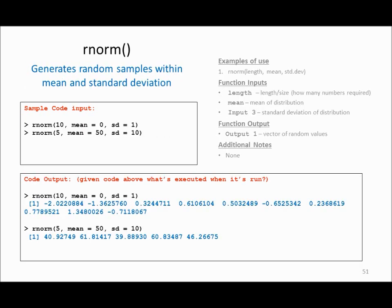rnorm is a function used to generate random samples using mean and standard deviation. If I want ten random samples I can call rnorm(10, mean=0, sd=1) and I get ten random samples within that range. If I want five random samples with mean equals 50 and standard deviation equals 10, I call that function and get five random samples within that range.